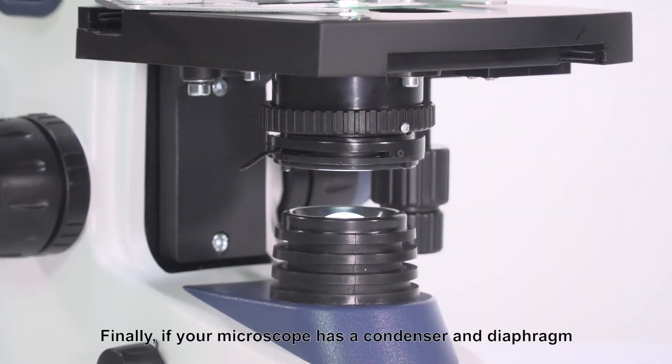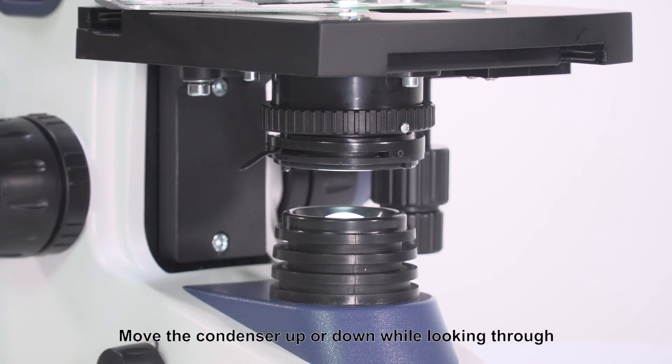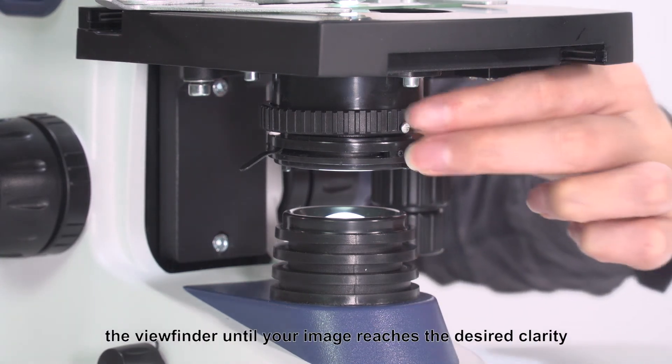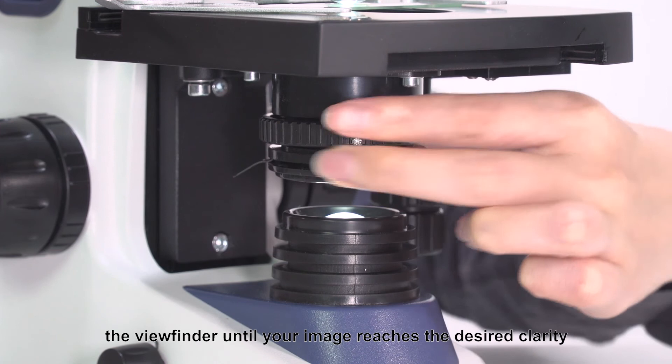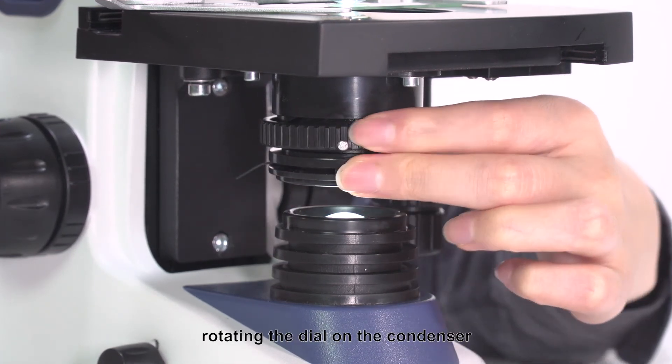Finally, if your microscope has a condenser and diaphragm found beneath the stage, you can use them to focus the light on your specimen for a sharper image. Move the condenser up or down while looking through the viewfinder until your image reaches the desired clarity. In this case, the condenser is moved through rotating the dial on the condenser.